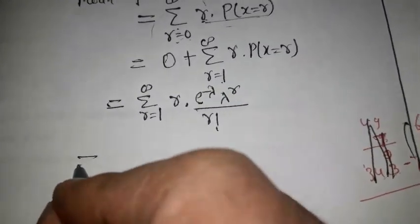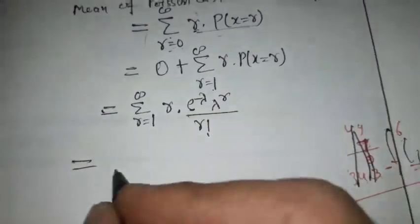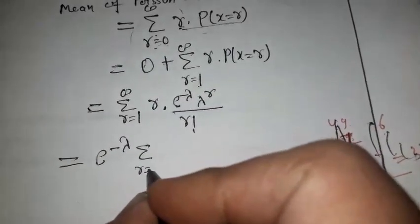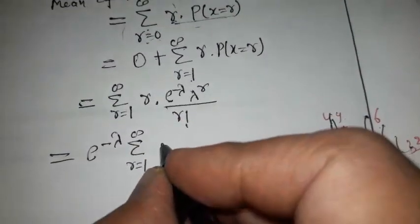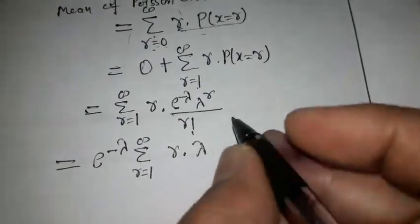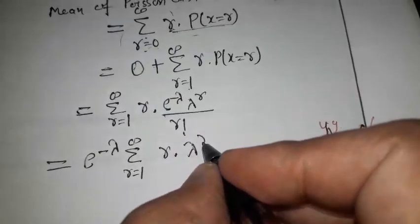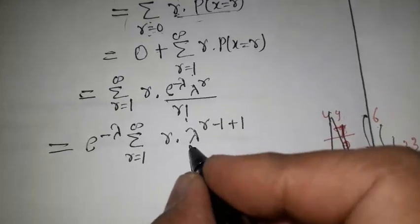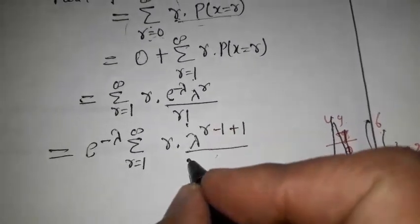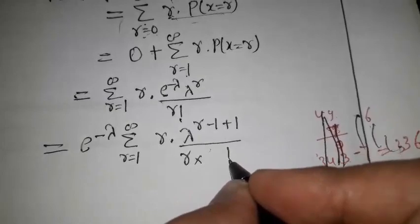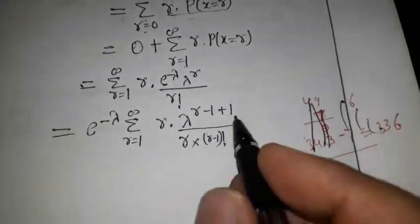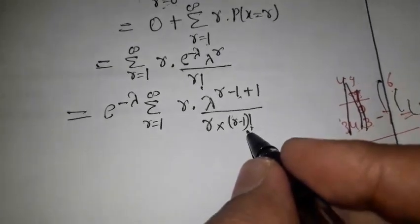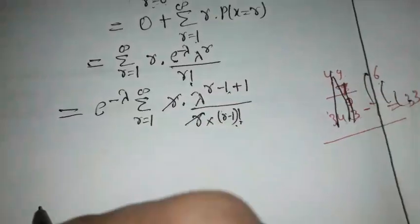Now solving this, e to the power minus lambda is taken outside the summation from r = 1 to infinity, then it becomes r into lambda to the power r upon factorial r. Here in lambda's power we add minus 1 plus 1, which makes no difference. Factorial r can be written as r into factorial(r−1), so r and r cancel.